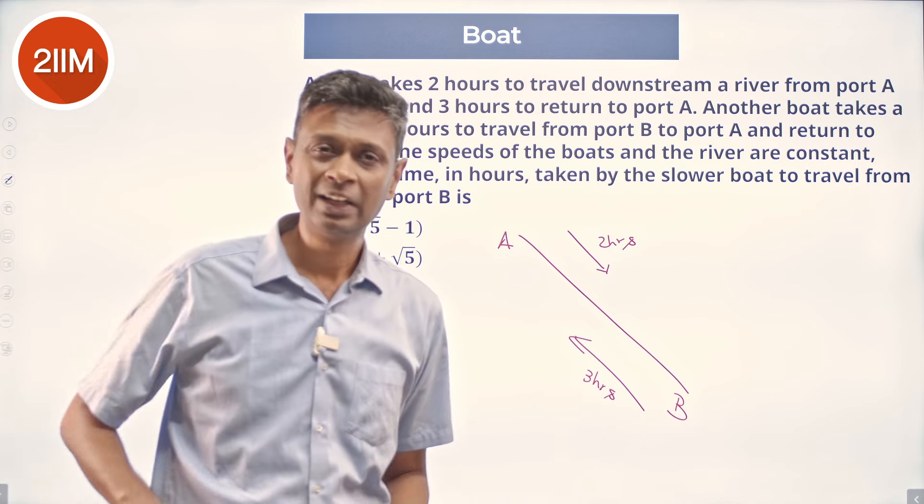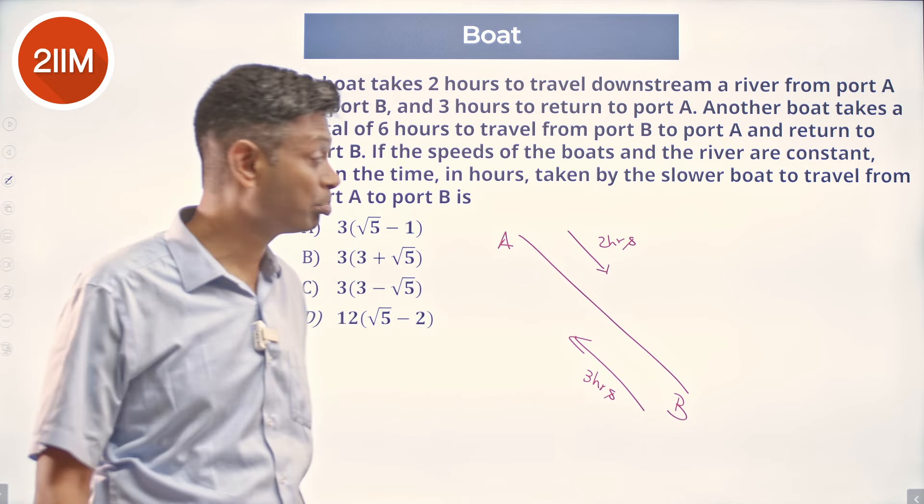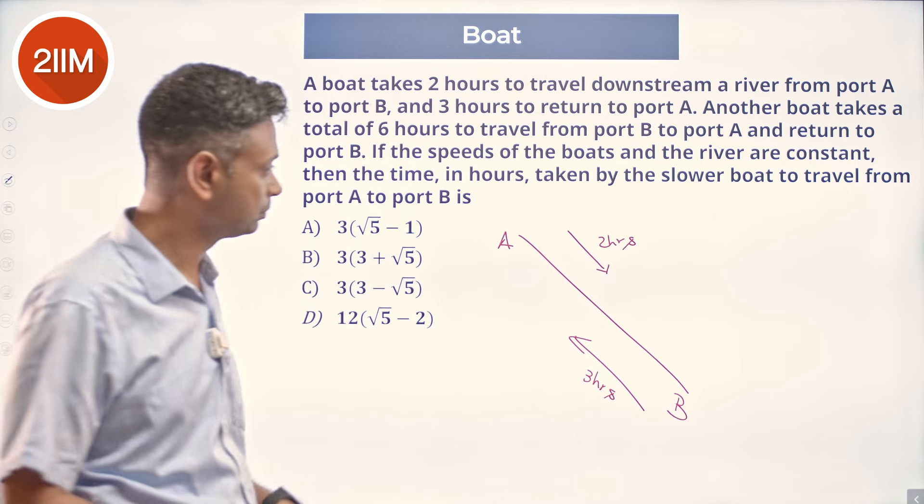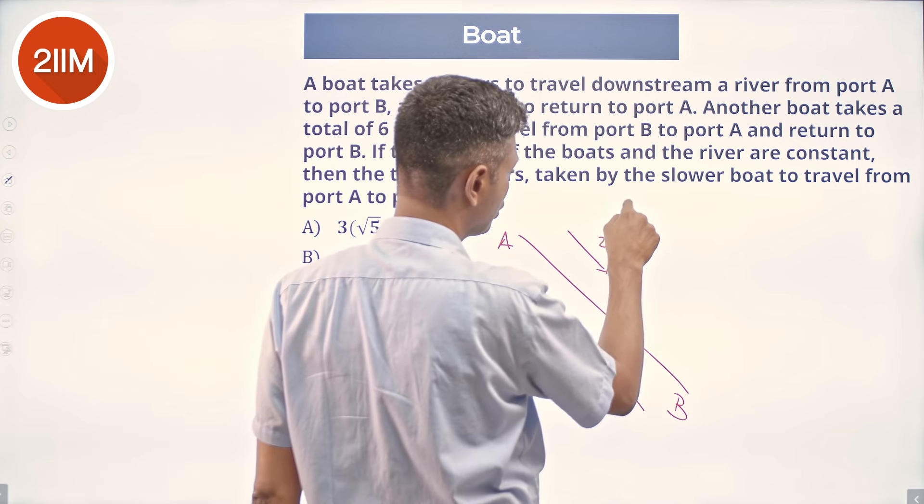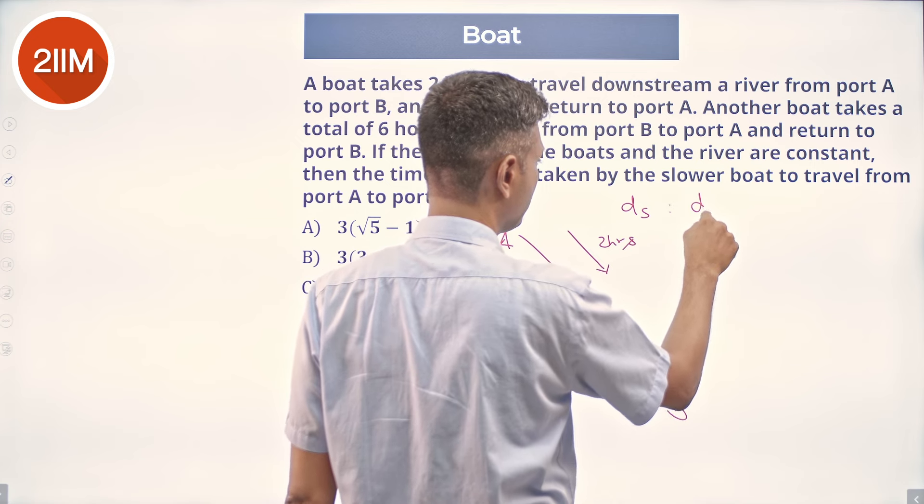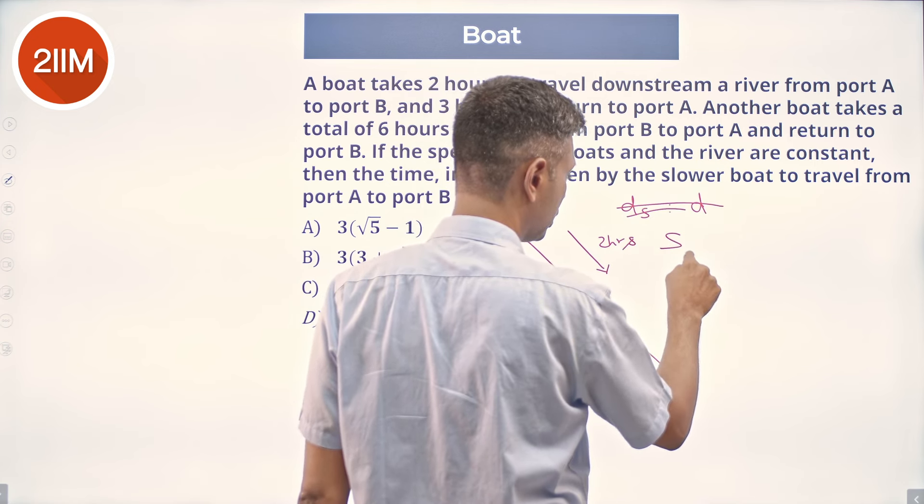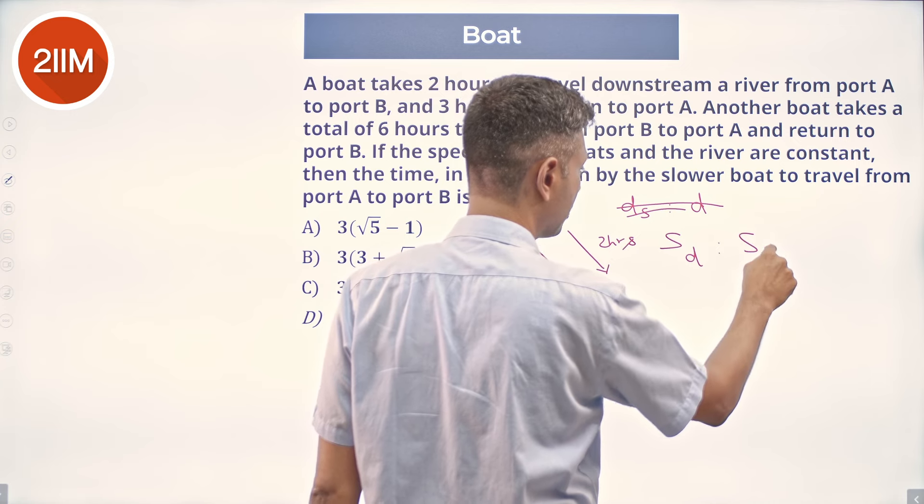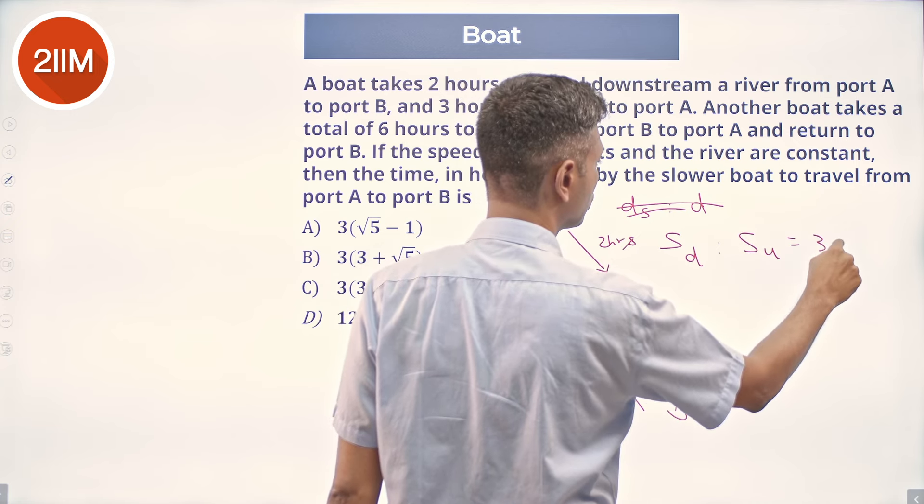Two hours, three hours. Time taken as two hours to three hours. Speed ratio should be the other way round. So, downstream speed to upstream speed. Speed downstream is to speed upstream, three is to two.